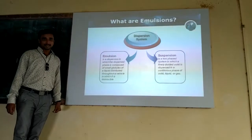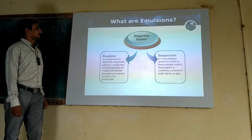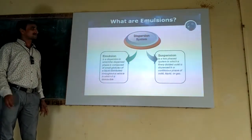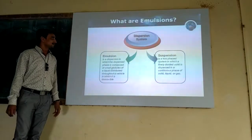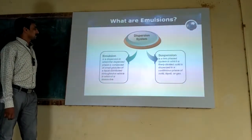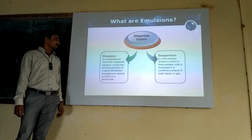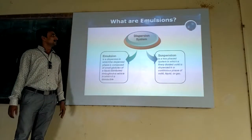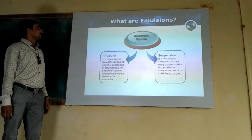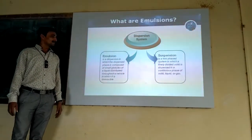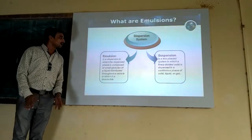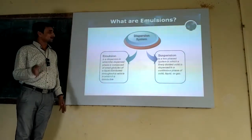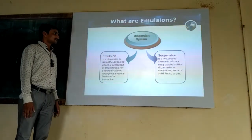Now, the disperse system. This is a concept in pharmaceutics where a dispersed material exists in another phase — that is called a disperse system. Emulsions and suspensions both belong to disperse systems. In an emulsion, a liquid is dispersed into another liquid. In a suspension, a solid material is dispersed into a liquid.